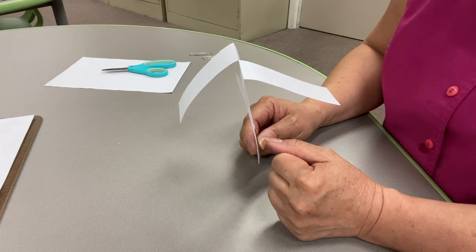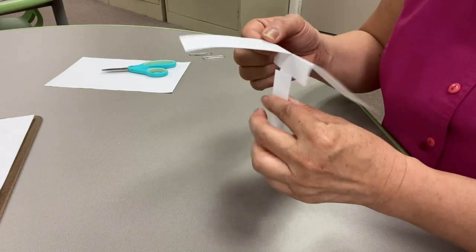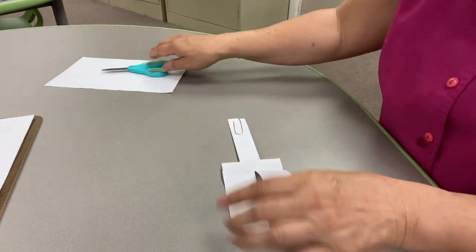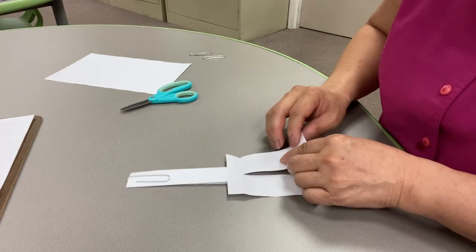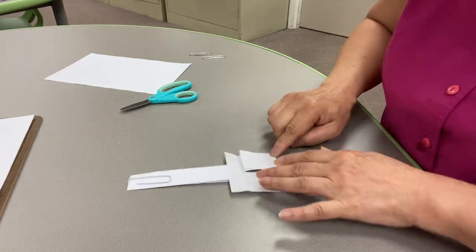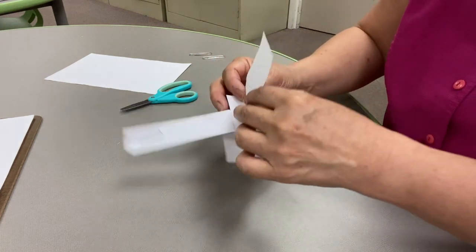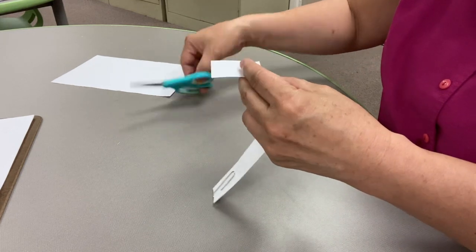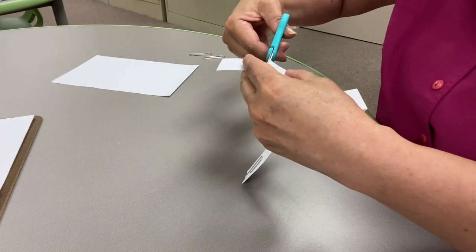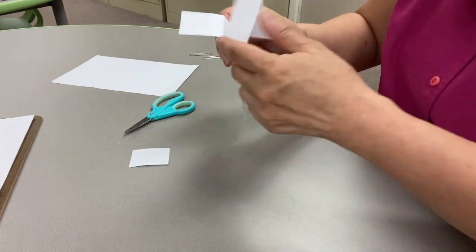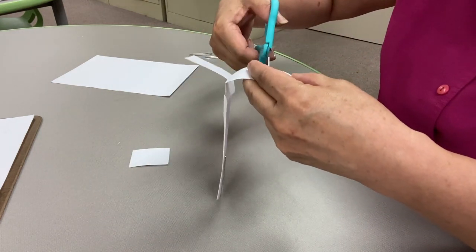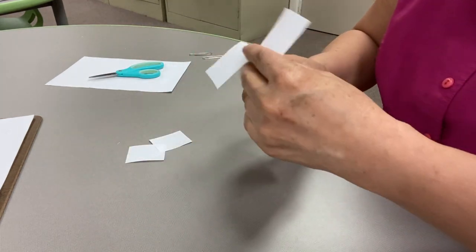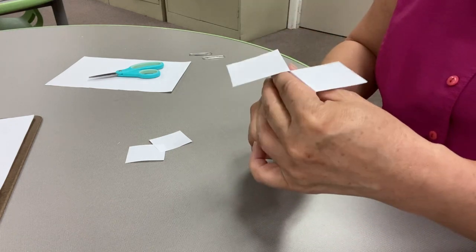So the one change I'm going to make is I'm going to make the wings shorter. So let's cut the wings. How about in half? And let's see how this twirlybird flies.